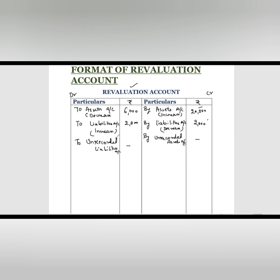To carry out the whole process of revaluation or reconstitution, if there are any expenses or fees — such as professional fees or partner's remuneration — we also note these on the debit side, debiting 'To Cash or Bank Account' or the relevant partner's capital account.